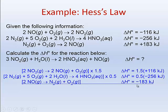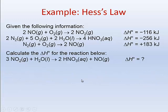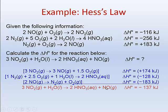Now let's multiply the coefficients through. For step one, multiplying by 1.5: 1.5 × 2 = 3 NO₂, 1.5 × 2 = 3 NO, and 1.5 × 1 = 1.5 O₂. We do the same for step two. Now we cancel: step one produces three moles of NO, and step three has two moles of NO as a reactant — those two cancel, leaving one mole of NO, which is what the overall reaction needs. Then the nitrogen: one mole of N₂ as a reactant cancels with one mole of N₂ as a product.